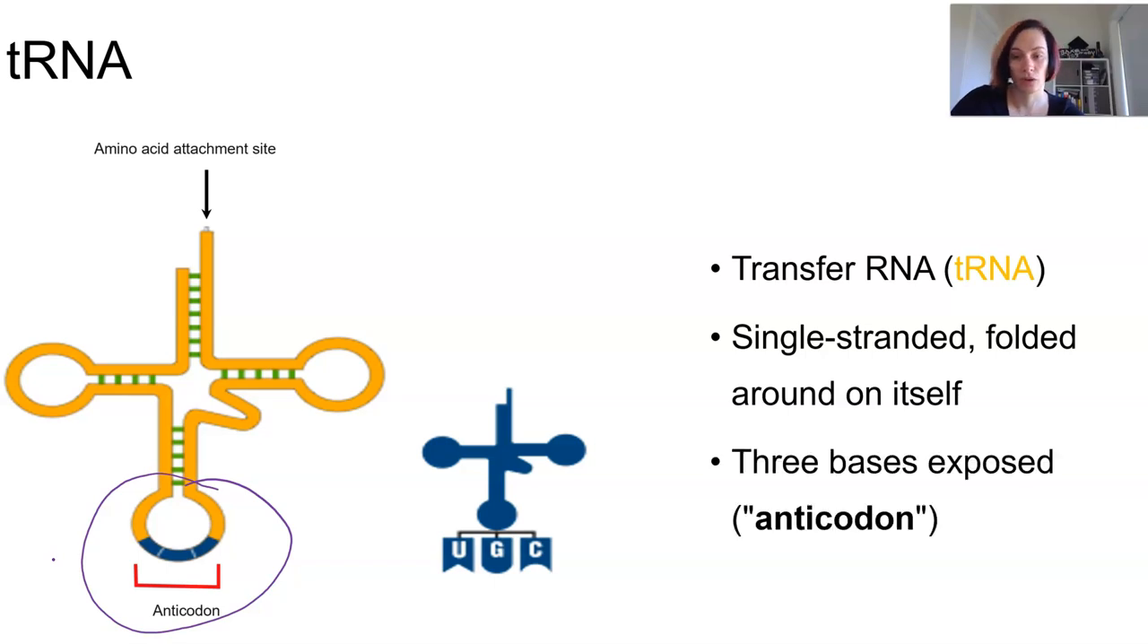Transfer RNA is a molecule made of RNA. It bends around on itself to form this really interesting 3D shape. So remember that RNA is still single-stranded, so because of the way it's folded, there's actually going to be three nucleotides that are exposed at the bottom, and these are known as the anticodon, because they're going to match complementary codons on the mRNA strand.